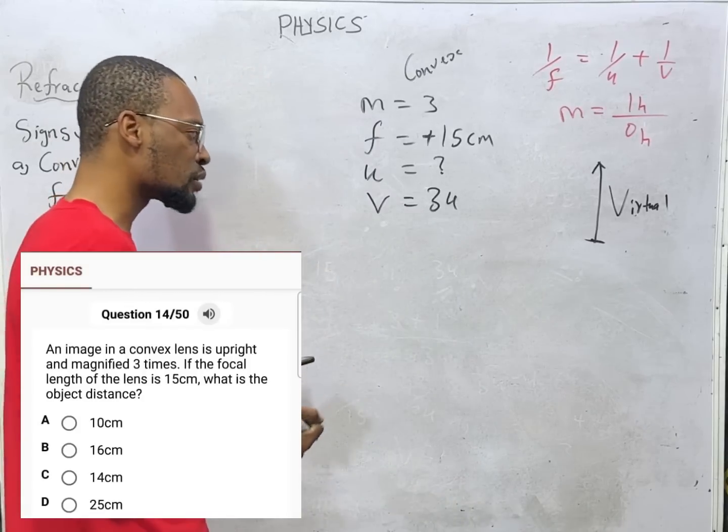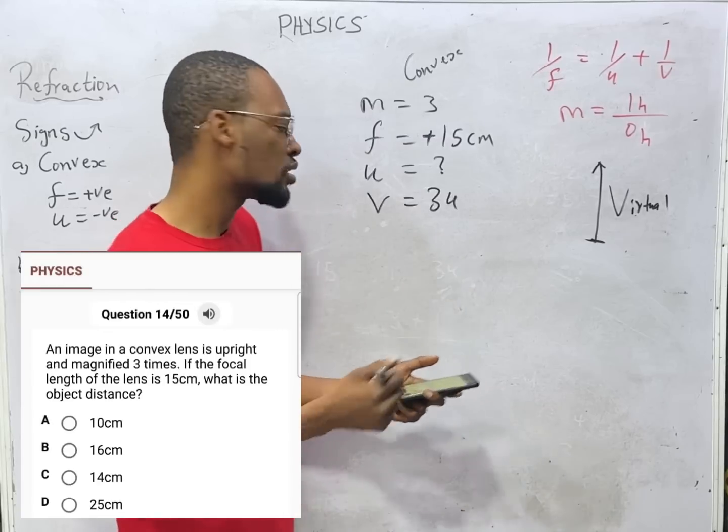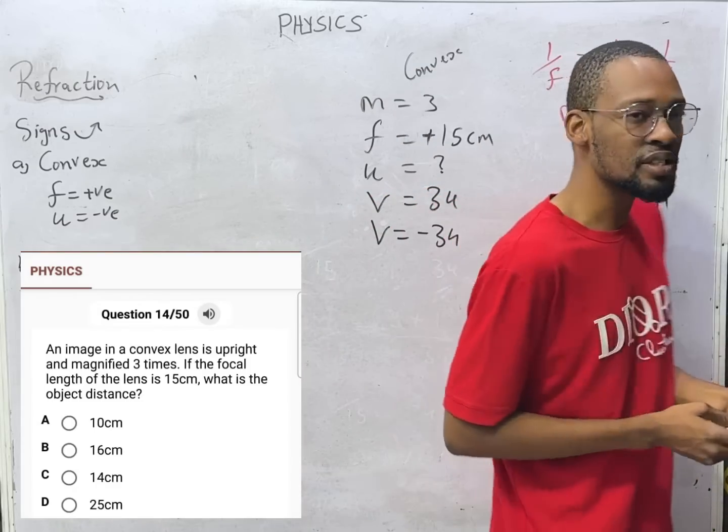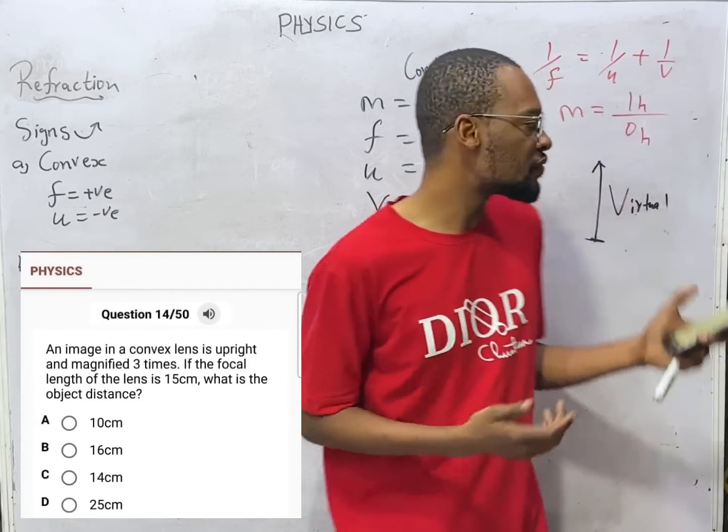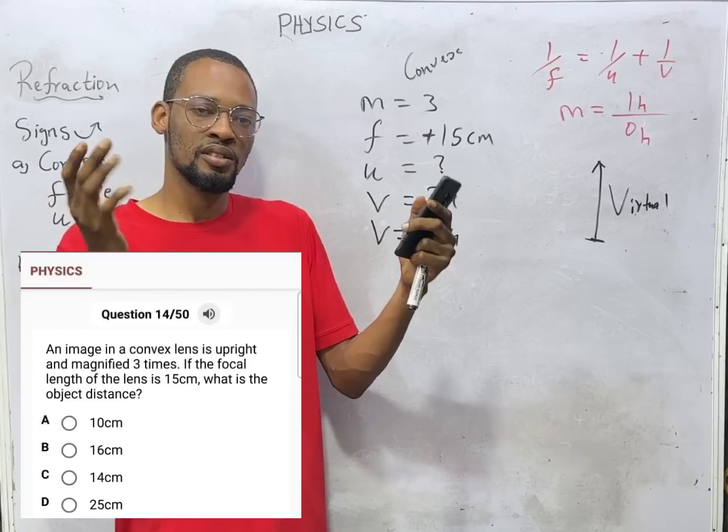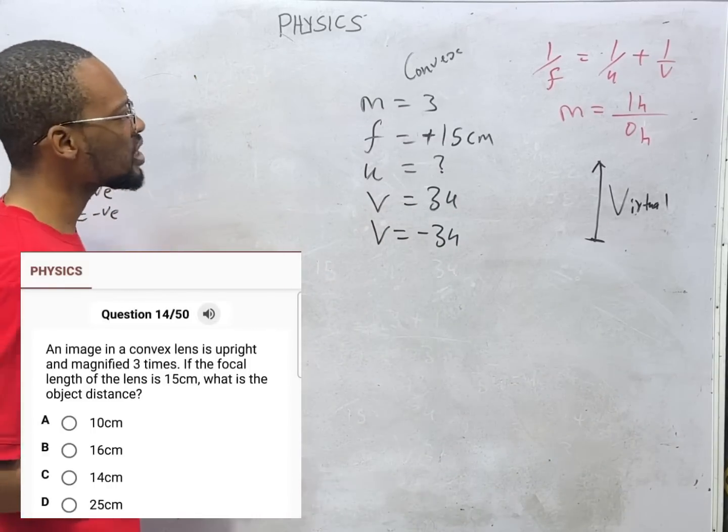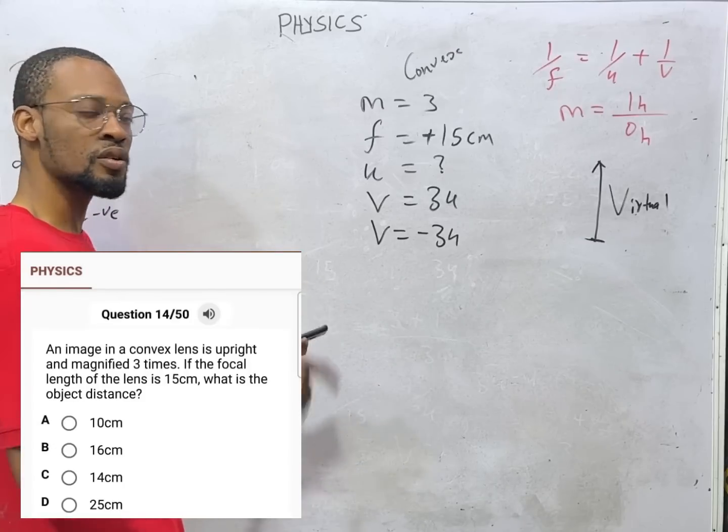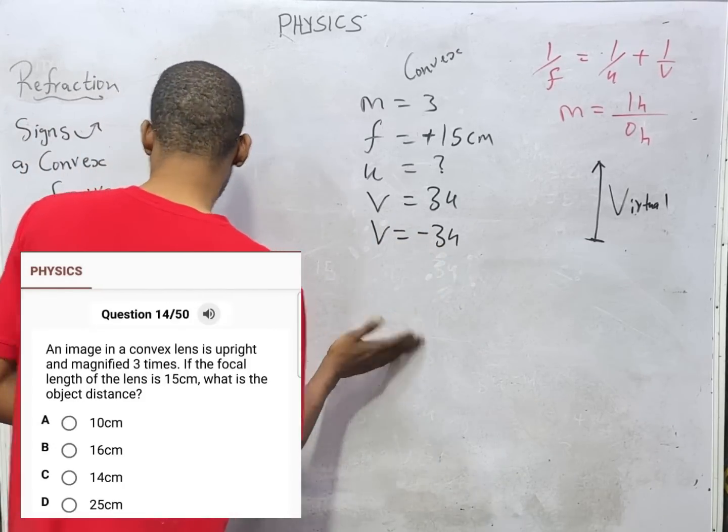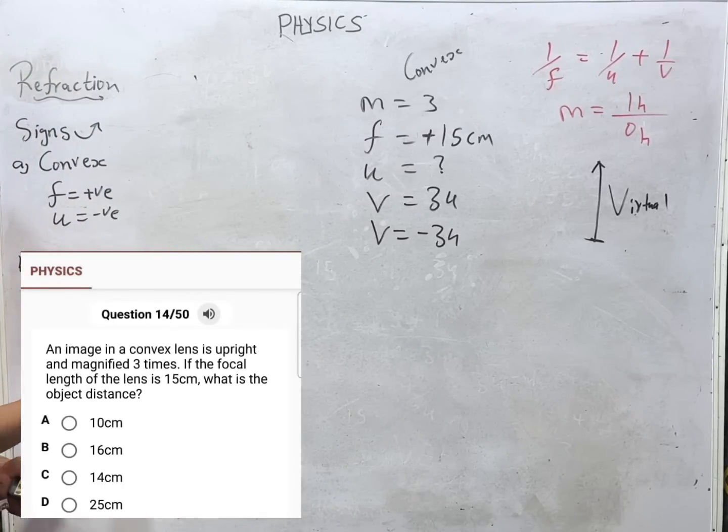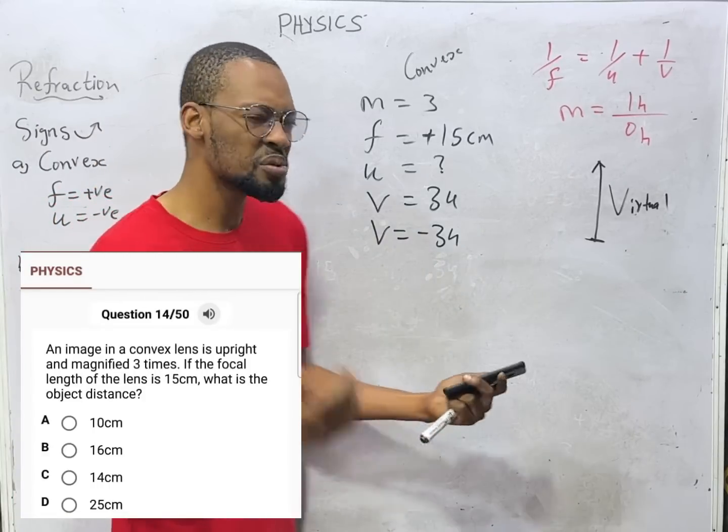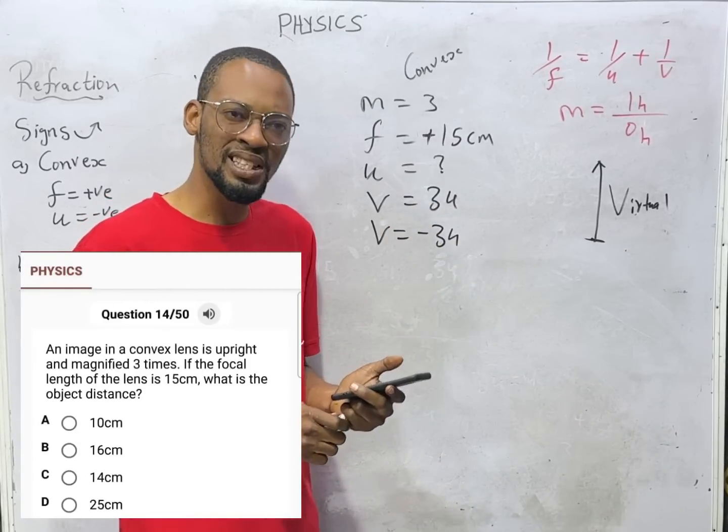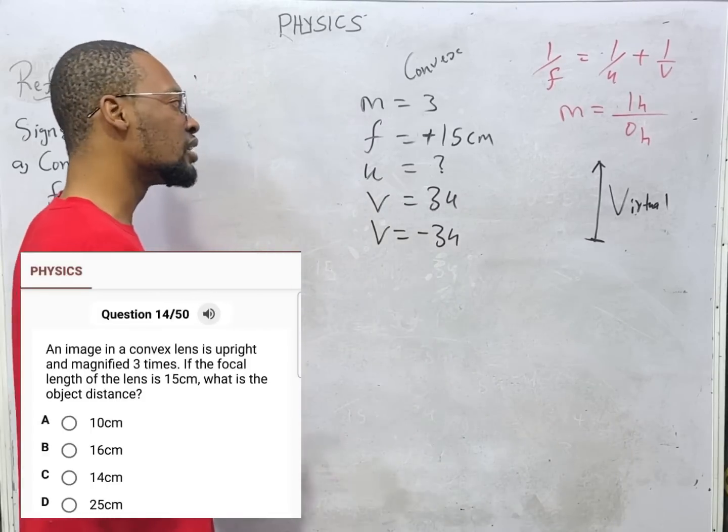Only virtual images can be upright. An erect image of a convex lens is usually virtual. For a virtual image, image distance is negative, so V equals minus 3U. Virtual images are always erect. So if you are dealing with convex lens and the image is virtual it means it is upright, so you take the image distance as negative. These are technical things you must take note of.